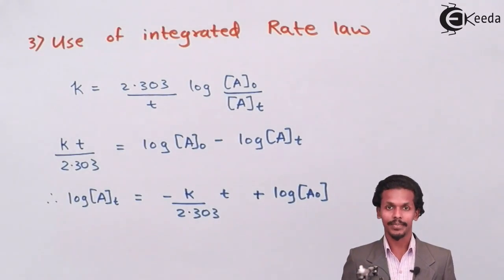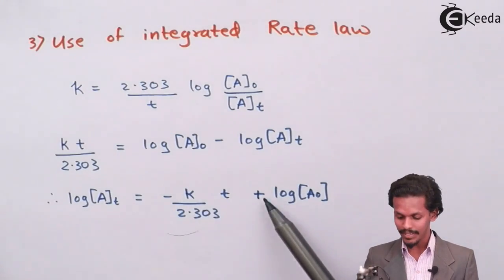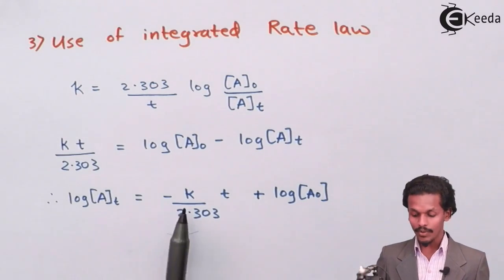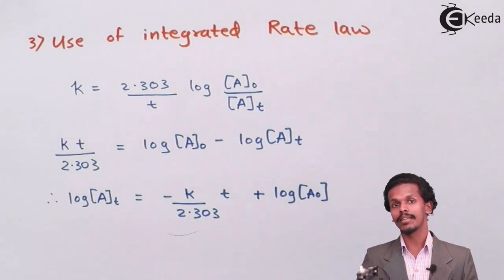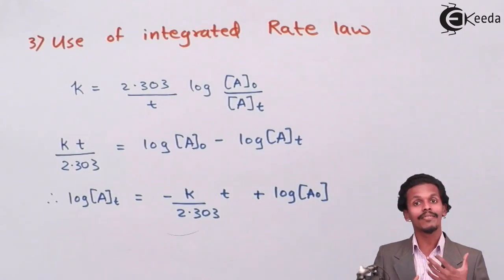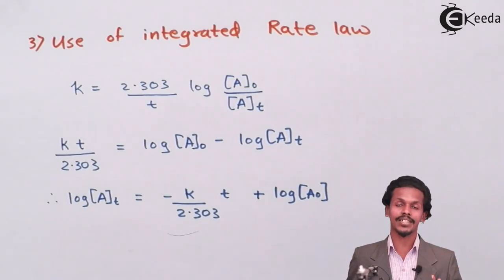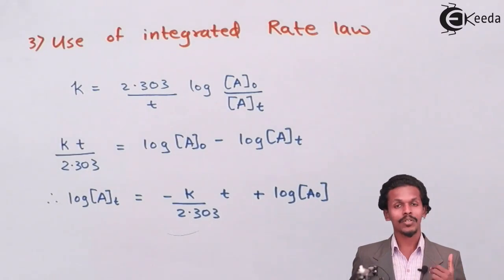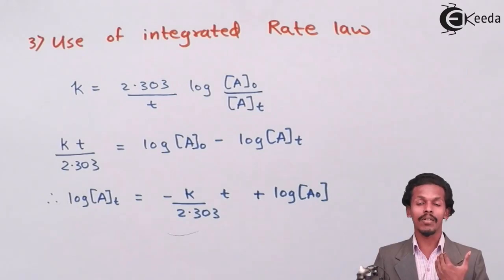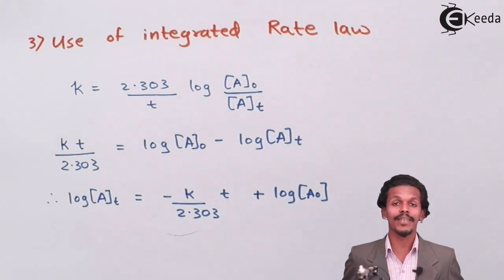So this will be the equation that we get, and the whole equation is now represented by the straight-line graph Y equals MX plus C. By this, if the rate constant we calculate at every time interval remains constant, then we can determine that the reaction is a first-order reaction. If it is not constant, then it is not a first-order reaction. Using this integrated rate law, we can determine whether a reaction follows first-order kinetics.